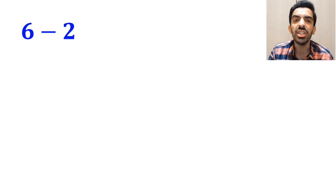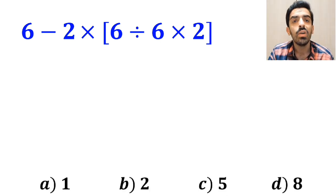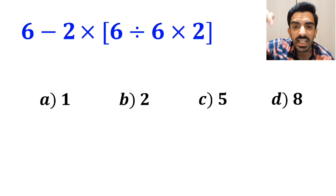What is the value of the expression 6 minus 2 times open bracket 6 divided by 6 multiplied by 2 close bracket? Which option do you think is the correct answer to this question?